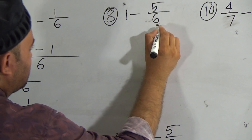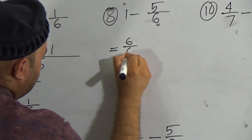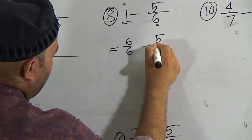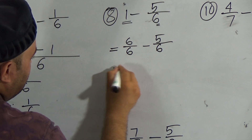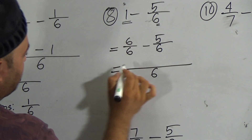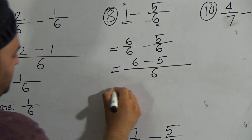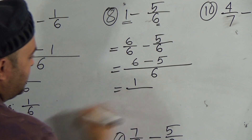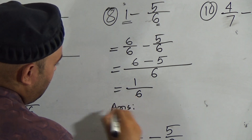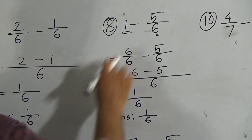In the second fraction, 6 is the denominator, so in the second line write 6 as denominator. Put the minus sign and the second fraction 5 out of 6. Since 6 is the same denominator, write 6 as denominator. Put the first numerator 6, the minus sign, and the second numerator 5. Subtract 5 from 6 — it will be 1, and the denominator will be 6. So the answer will be 1 out of 6.